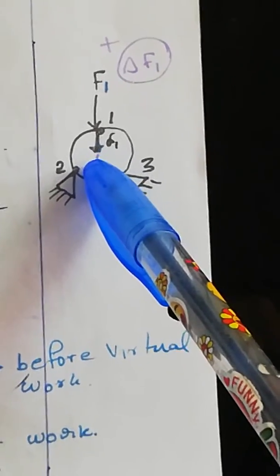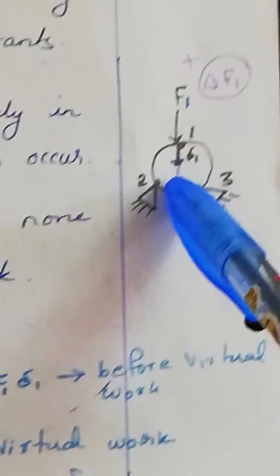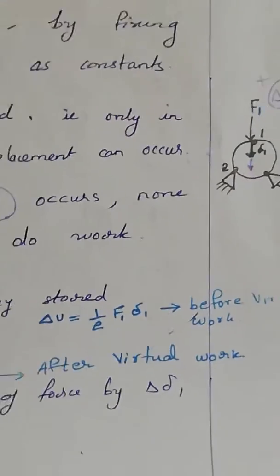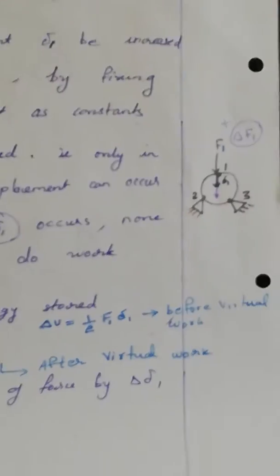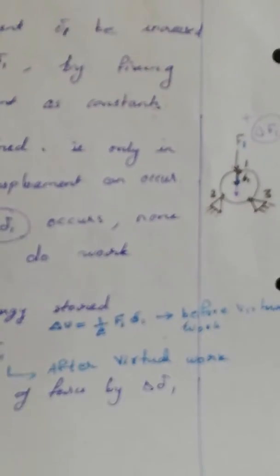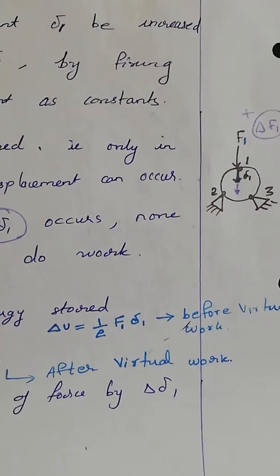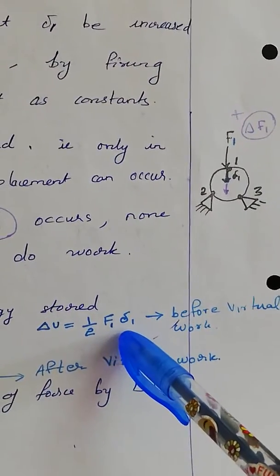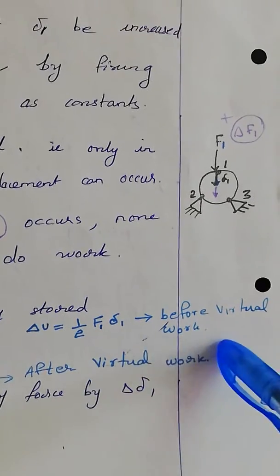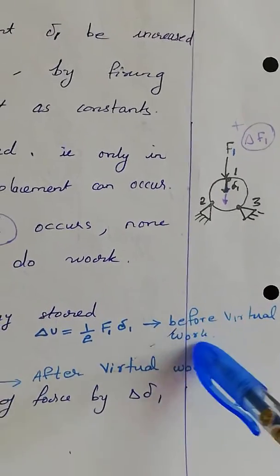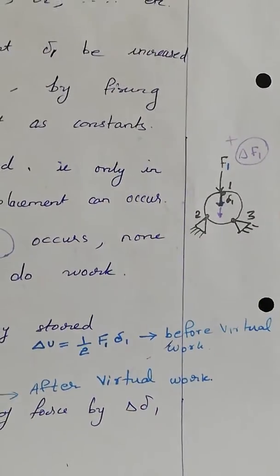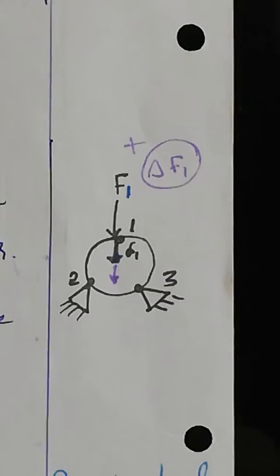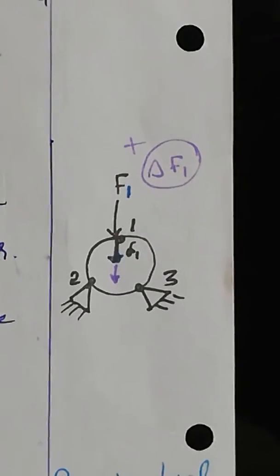This is the existing understanding. The work done, or strain energy stored, is represented by the equation: δU = ½ F1 · δ1. That is the situation before the virtual work. Now we come to the topic of how virtual work is done.